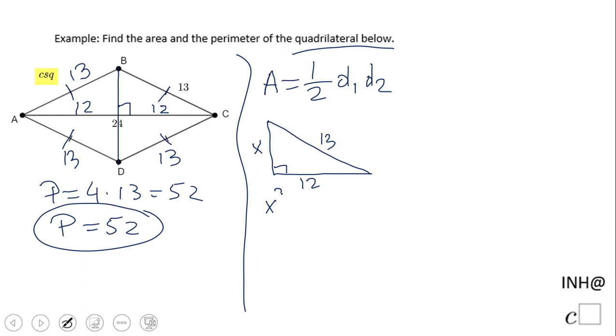x squared plus 12 squared equals 13 squared. x squared plus 144 equals 169. We subtract 144 and we get x squared equals 25. So x will be square root of 25, which is 5.